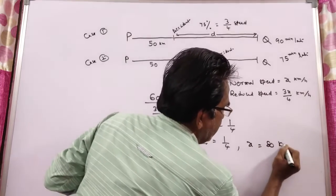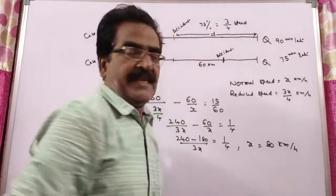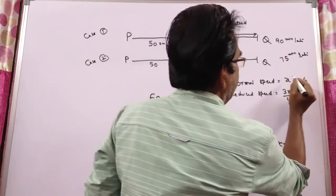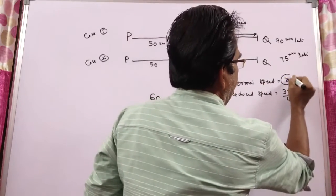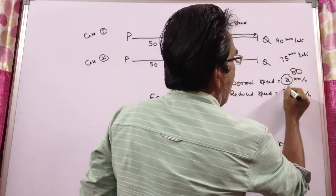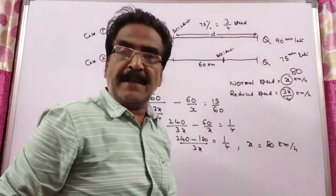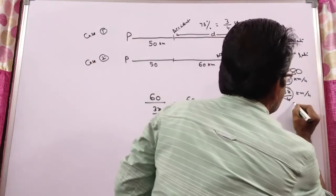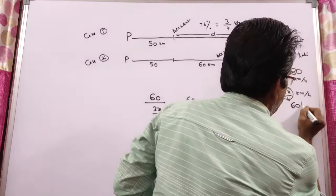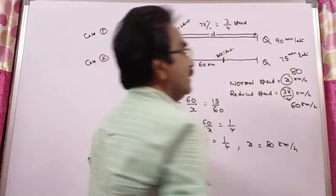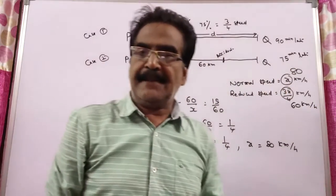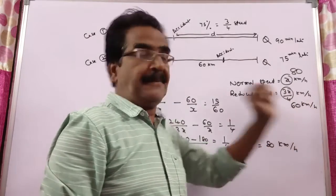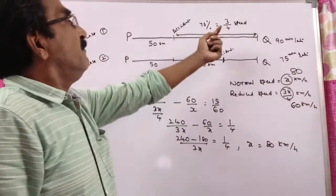So X equals 80 kmph — this is the normal speed — and the reduced speed is 3/4 of 80, that is 60 kmph. So normal speed is 80 kmph and reduced speed is 60 kmph.